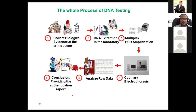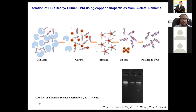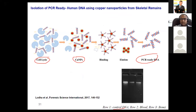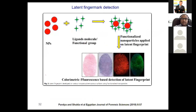In another forensic application, we looked at DNA extraction, which normally involves collection of evidences, extraction, multiplex PCR amplification, and then authentication. We found that using copper nanoparticles, we can do cell lysis, DNA binding, and elution all together to get PCR-ready DNA. Studies done by one of our co-workers used controlled DNA from blood and bone, achieving good DNA extraction and good PCR bands — reducing a lot of effort in DNA extraction.